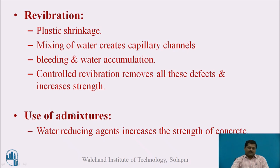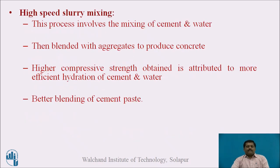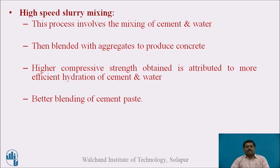The third method is the use of admixtures. Modern chemical admixtures, particularly water-reducing agents, help reduce the water-cement ratio of concrete. The fourth method is high-speed slurry mixing, which involves properly mixing cement and water first to form a cement paste, then adding it to the aggregate. This increases the hydration process of cement and gives higher strength compared to conventional mixing where all materials are added at once.